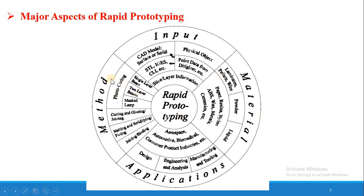The third major aspect is the method. What method are you going to apply in Rapid Prototyping? The method may be photo curing — including single laser beam, two laser beam, or mask lamp method — where curing of raw material takes place due to light or photons. Another method may be cutting or gluing/joining technique. The next method is melting or solidification by fusing, and the last is joining or binding method.